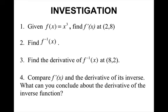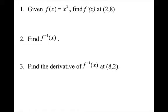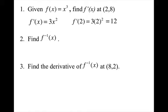We're going to do an investigation. Please pause the video and answer these four questions on your own first. For question one, you had to find the derivative of x³ at the point (2, 8). The derivative is 3x², and when you plug in 2, you get the slope of the tangent line to be 12.